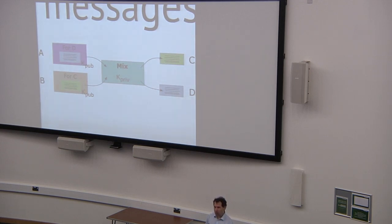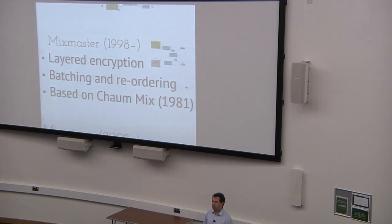So this is a good start. It means that someone observing isn't able to trivially work out who's communicating with whom, but it still has the vulnerability that the mix is able to know that Alice is talking to Dave and Bob is talking to Charlie. And so if that mix is compromised, is the subject of legal challenges, then the user's privacy is going to be violated. So that brought us on to the successor system, MixMaster.